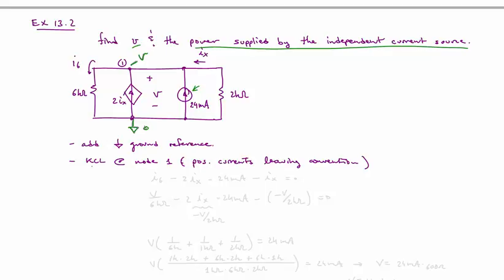And then we write a KCL equation at node V, or node 1. I labeled it as node 1. So we're going to have some currents leaving. So I have I6 that's leaving. I have minus, this is a controlled current source. I should have mentioned that. That's something new in this circuit.